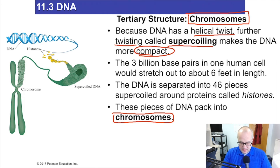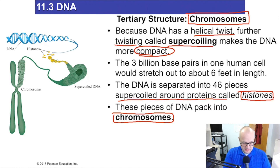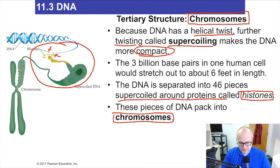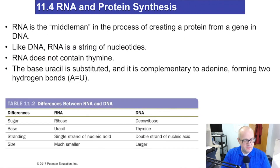DNA is supercoiled around proteins called histones — that's what the DNA wraps around for storage. In this schematic, you can see the DNA and histones beginning to interact and coil around each other for long-term or short-term storage, so they can be accessed as required. And that's the end of section 11.3.